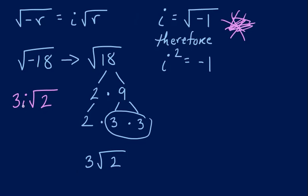Because then it's saying, therefore, if i is equal to the square root of negative 1, then i squared is equal to negative 1.